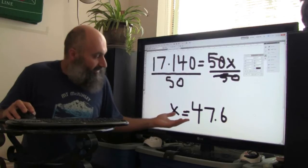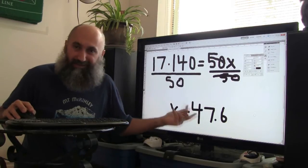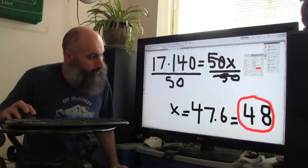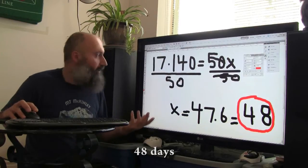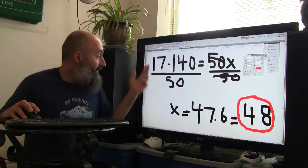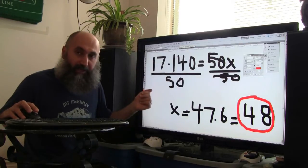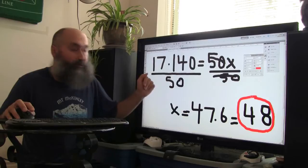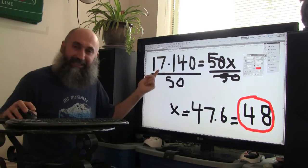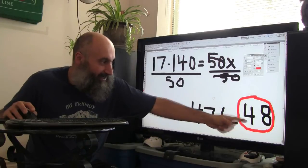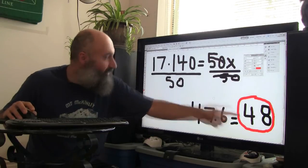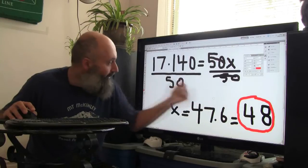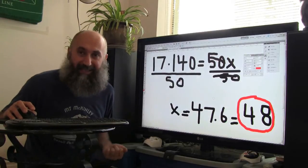So 140 videos is going to take me 48 days total based on my current pace. I've already gone through 17 days of that and gotten 50 videos done. It was going to take me 48 days to do 140 videos, but I've already got 50 videos done in 17 days.